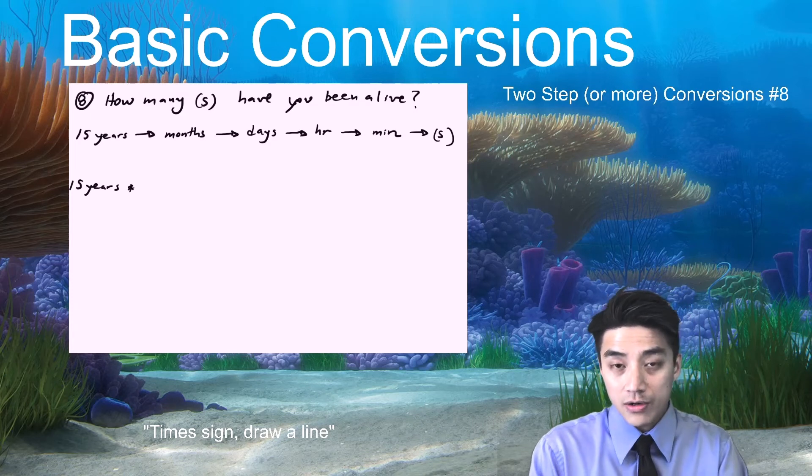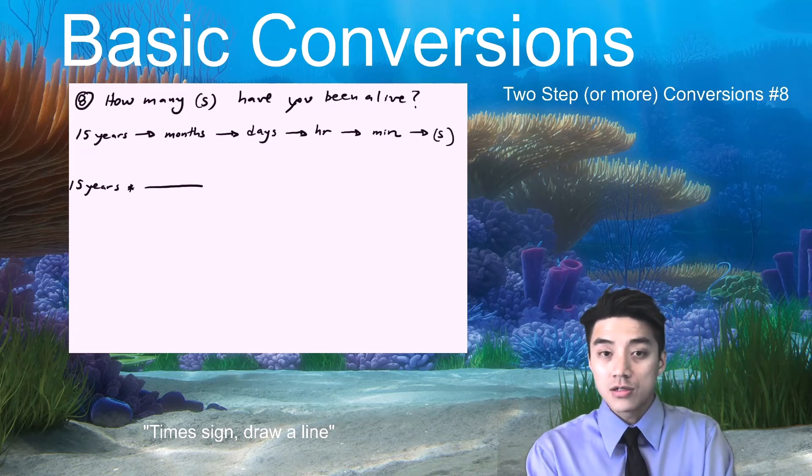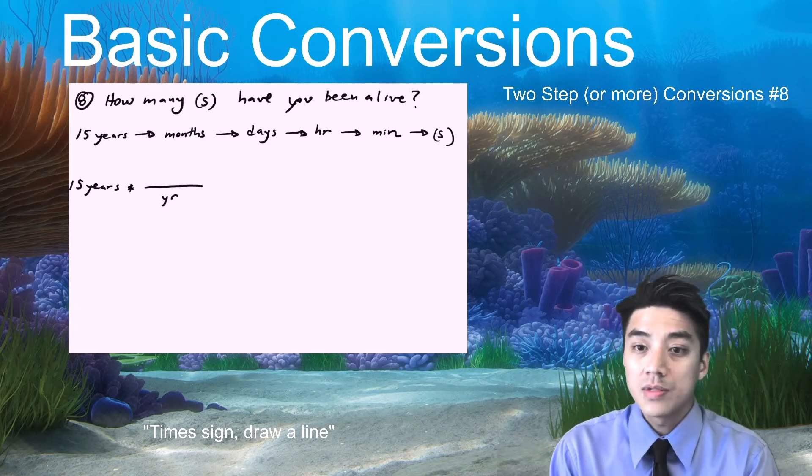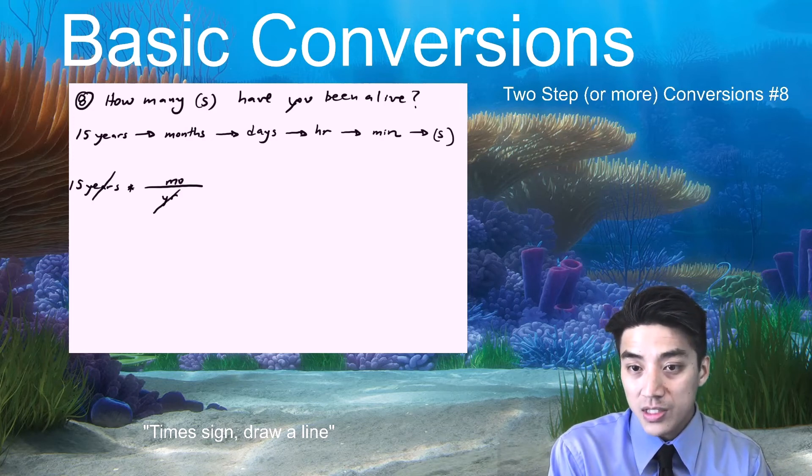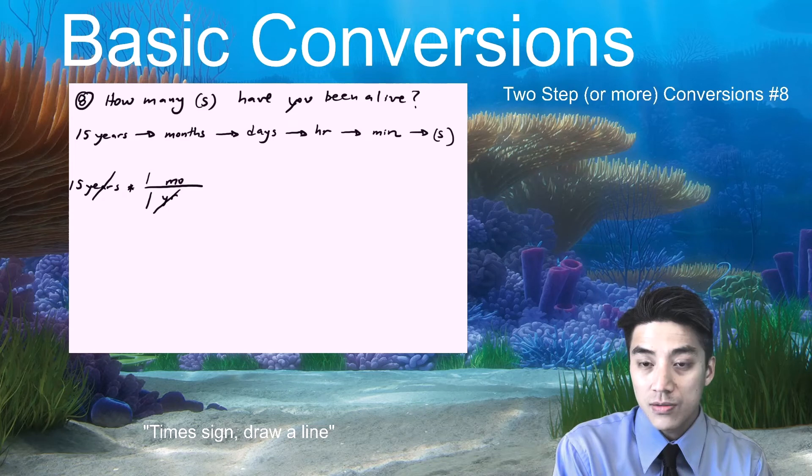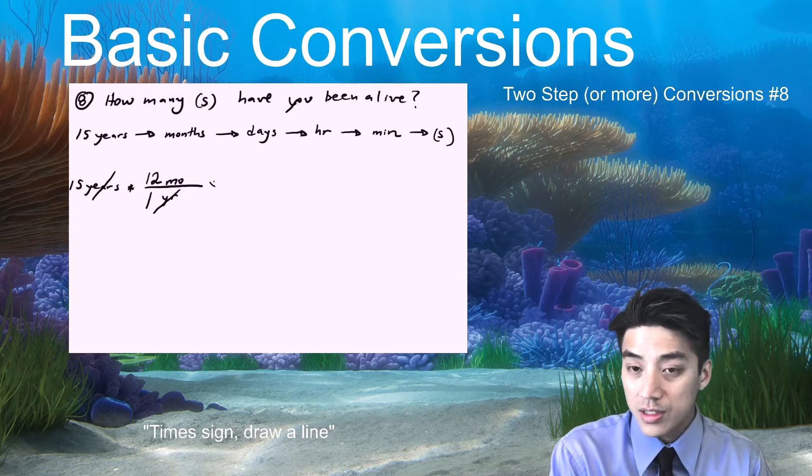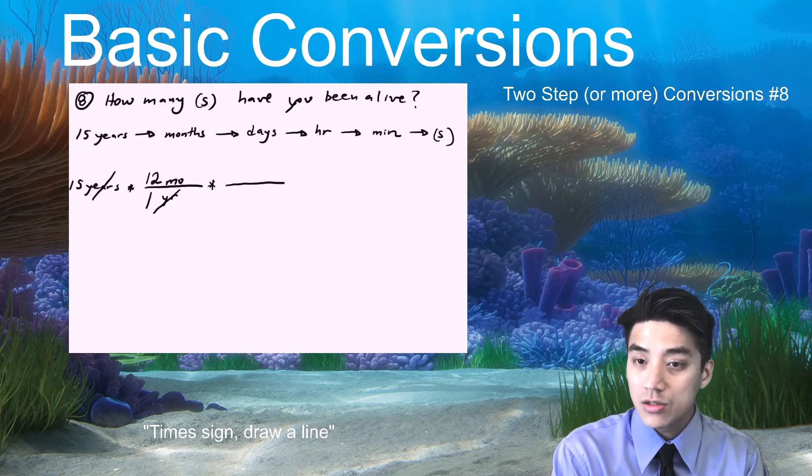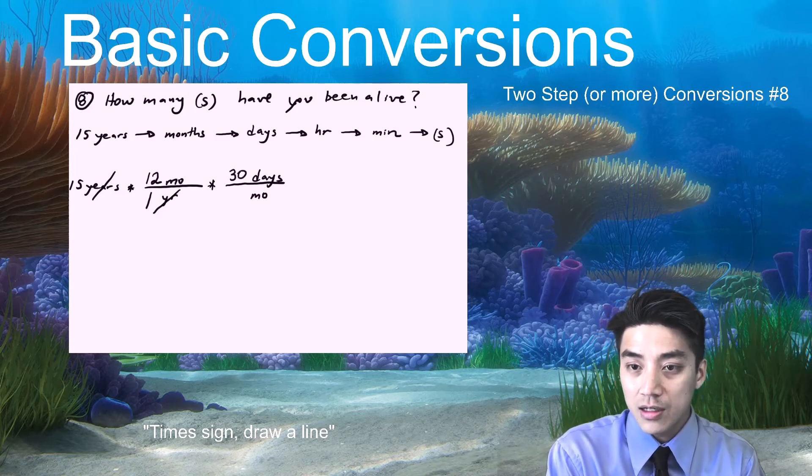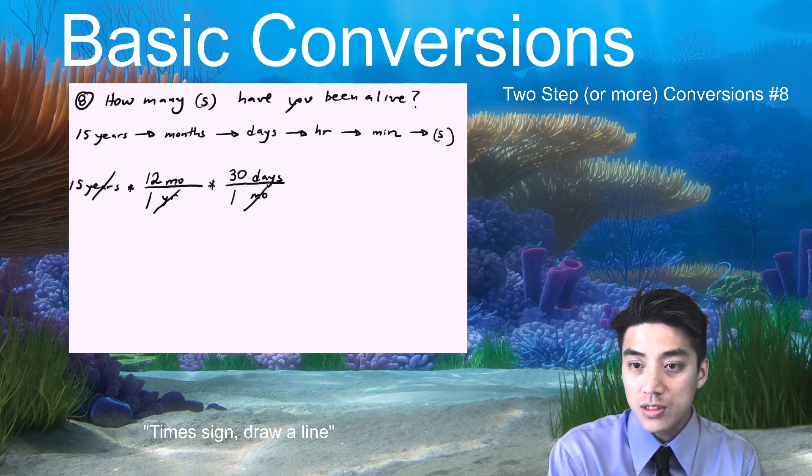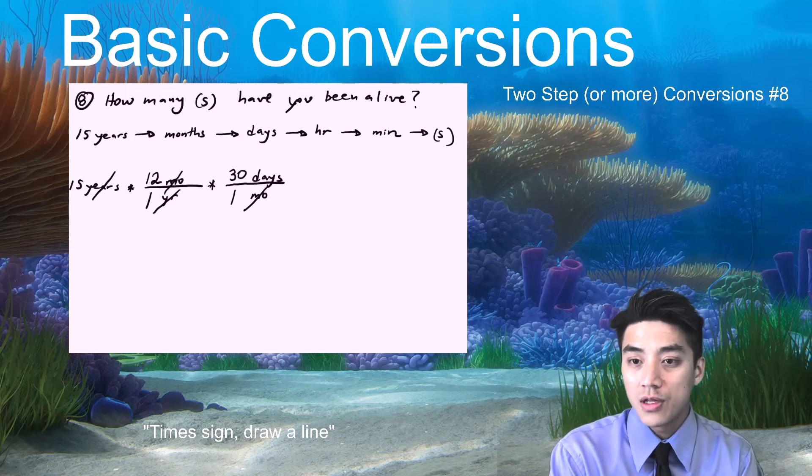So let's start by writing down what you're given. Okay, you know that you're 15 years old. 15 years. Time sign, draw a line. Okay. So years will go on the bottom so that it cancels out. Months will go on top. Everyone knows that there's 12 months in a year. Okay, continue on with the problem. Time sign, draw a line again. Months will go on the bottom this time. Days on top. Make sure the units cancel out. And you fill in your numbers. Roughly 30 days in one month.